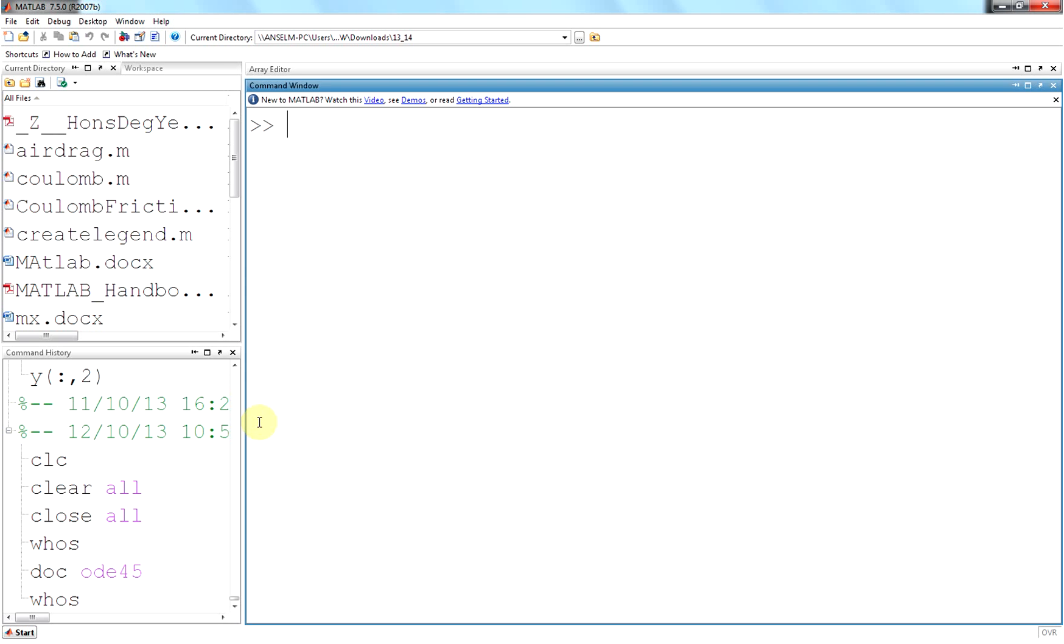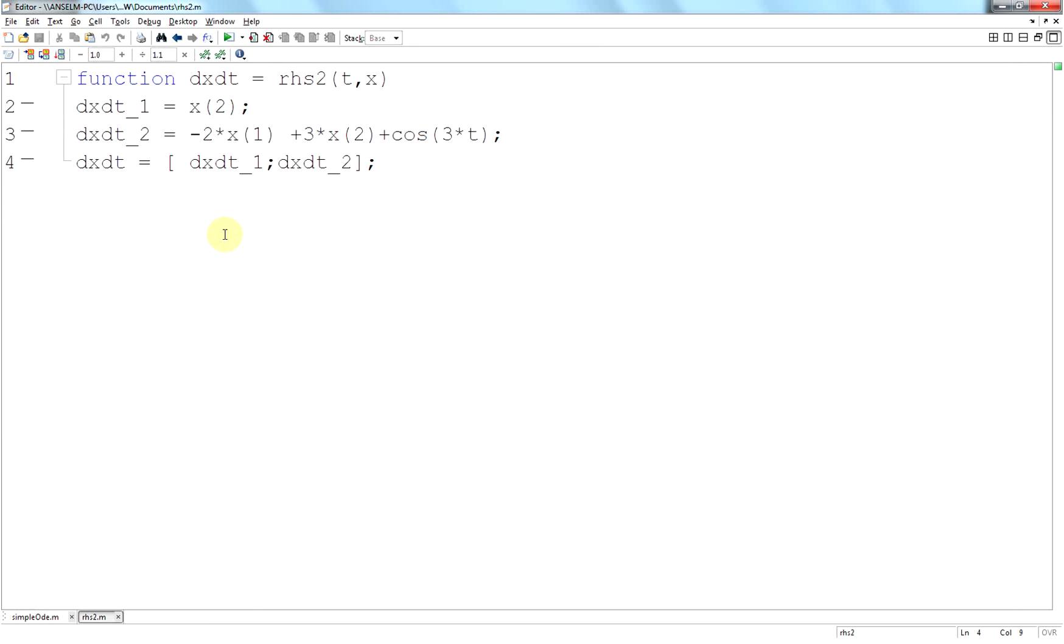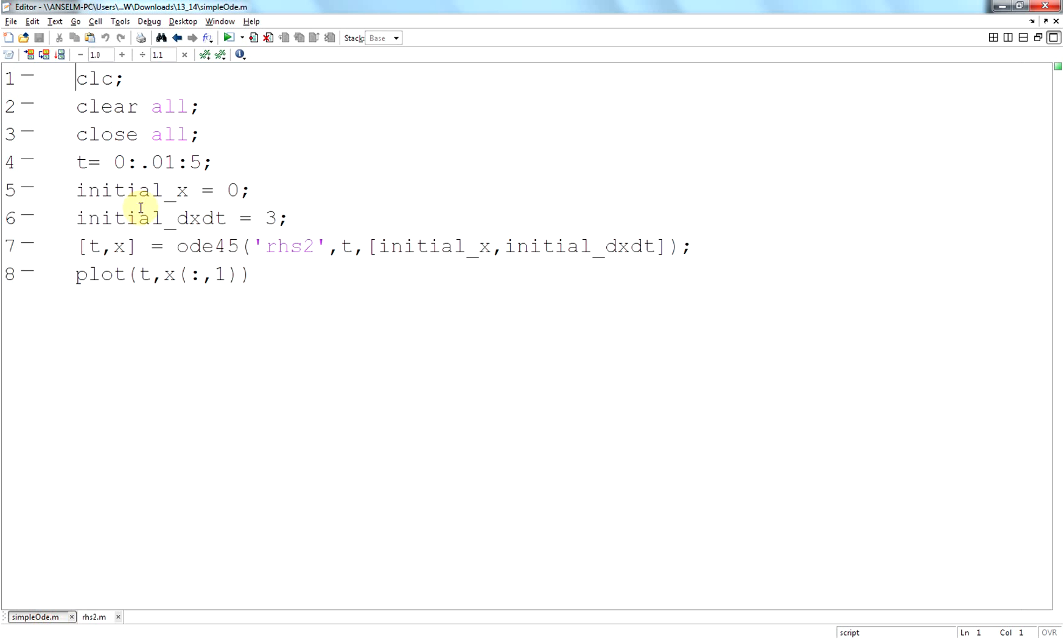Go out to MATLAB. So I clear the screen, I clear the workspace, I close all variables, I create a time turn from 0 to 5 in steps of 0.01. My initial value of x is 0, my initial value of dxdt is 3.